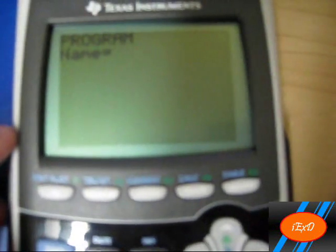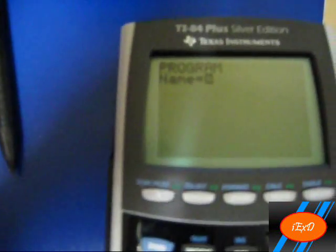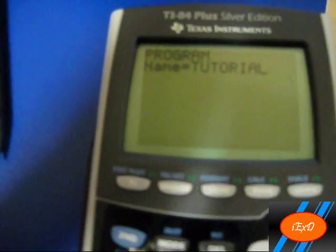This is where you enter the name of the program. Now in order to enter a name, you use Second Alpha, so you don't have to keep clicking Alpha and then a number to get the letter and all that stuff. I'm just going to call mine tutorial. Once you have your name for the program, click Enter.